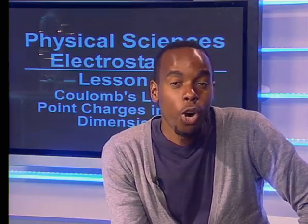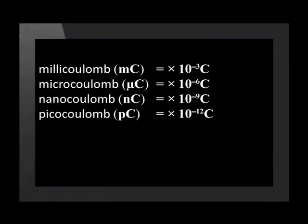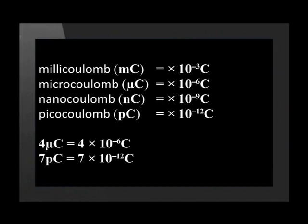Before we substitute values in the Coulomb's law equation, we need to ensure that we use the correct units. Firstly, the charges Q1 and Q2 must be measured in Coulombs. This table shows the conversions that may have to be made to charges before they are used in the equation. For example, 4 microcoulombs would be converted to 4 times 10 to the negative 6 Coulombs.